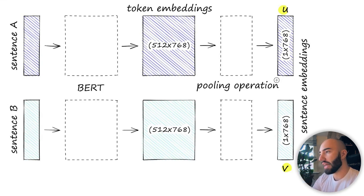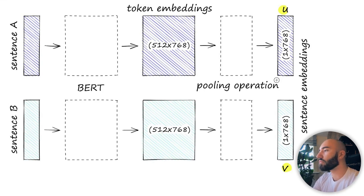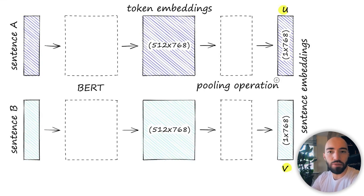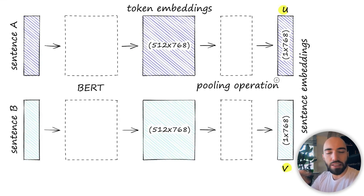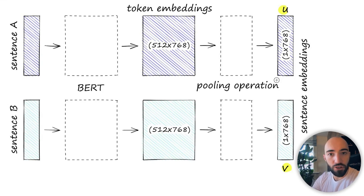What you can see right now is a Siamese network - almost like two copies of the same BERT, like Siamese twins. We would have two sentences, sentence A and sentence B, and we would feed both through our BERT model to produce token embeddings, then use a pooling operation like mean average pooling. From that, we get our sentence embeddings U and V. We optimize to get those embeddings as close as possible for similar sentences, and as far away from each other as possible for dissimilar ones.